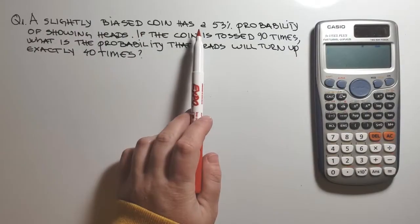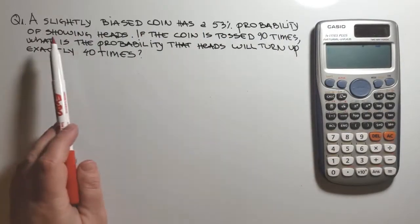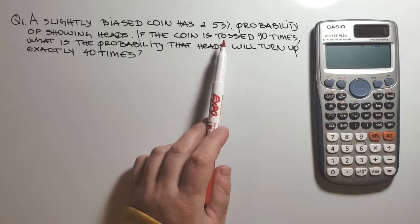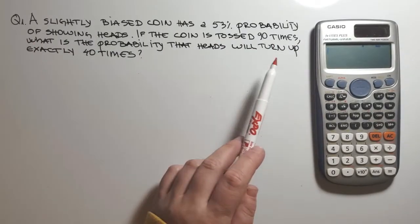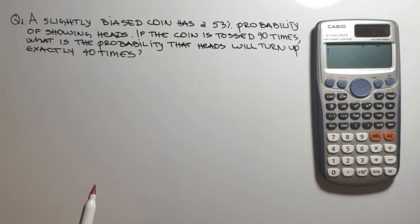A slightly biased coin has a 52% probability of showing heads. If the coin is tossed 90 times, what is the probability that heads will turn up exactly 40 times?